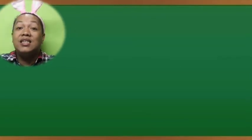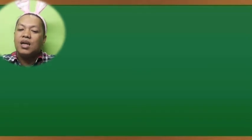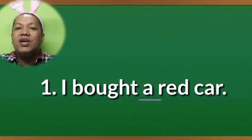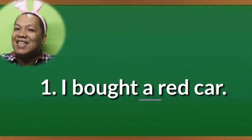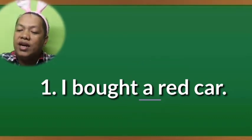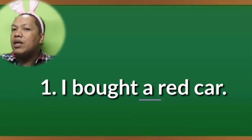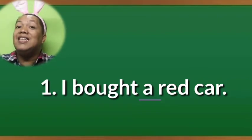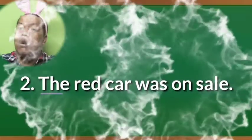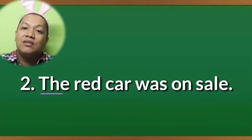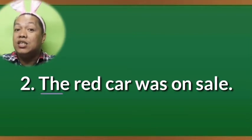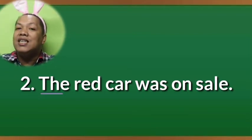Look at your screen. Sentence one: 'I bought a red car.' Notice that the underlined article in sentence one is the article 'a.' The listener doesn't know anything about the red car as implied in sentence one. Sentence two: 'The red car was on sale.' Notice also that there is an underlined word in sentence two.